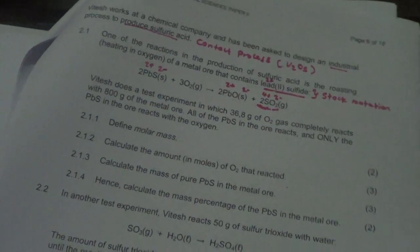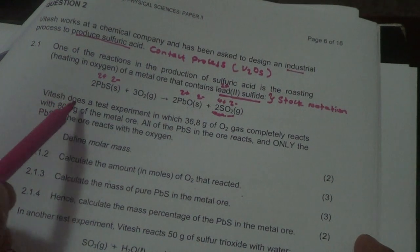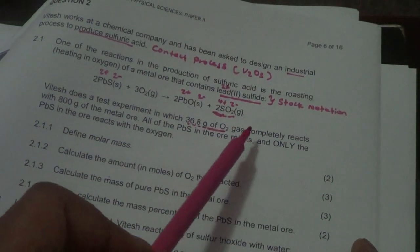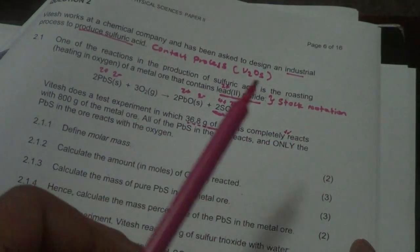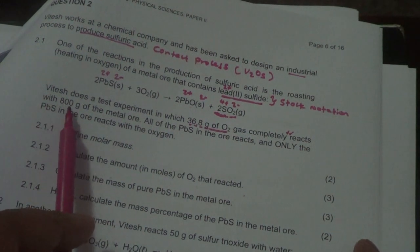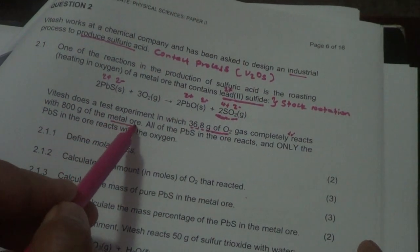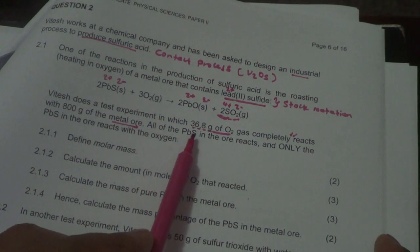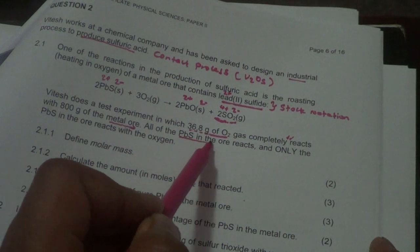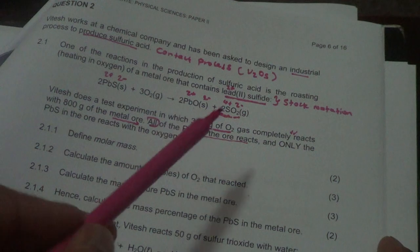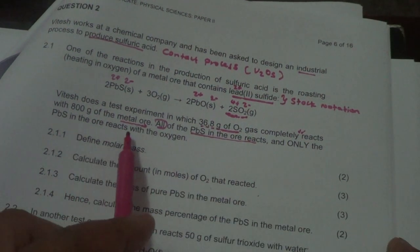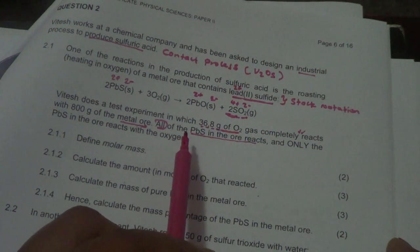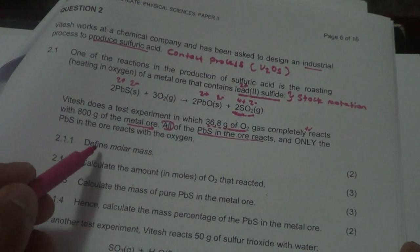Let's try without wasting too much time. It says Vitesh does a test experiment in which 36.8 grams of oxygen gas completely reacts. Once you hear that word completely it means it's a rate limiting reagent. With 800 grams of metal ore, the metal ore is a mixture of multiple substances. All of the PbS in the ore reacts, and only the PbS in the ore reacts with oxygen.